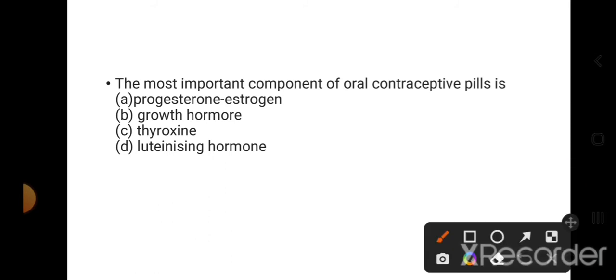Most important component of oral contraceptive pills: the most important component is progesterone and estrogen, because they prevent the ovulation process.